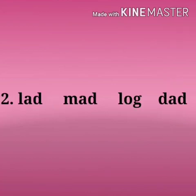Now the second one. Let us read the words. The first word is L-A-D, lad; M-A-D, mad; L-O-G, log; D-A-D, dad. Which is the odd one out? It's L-O-G, log, because lad, mad, and dad are of the same '-ad' sound. The word we cross out is log, which has the '-og' sound.